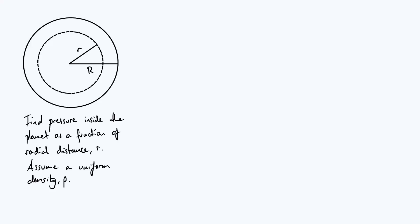Hello everyone, in this video we're going to be thinking about the internal forces that stop a planet from collapsing under gravity, and more specifically we're going to be finding the pressure, or the force per unit area, inside a spherical planet as a function of radial distance from the center.